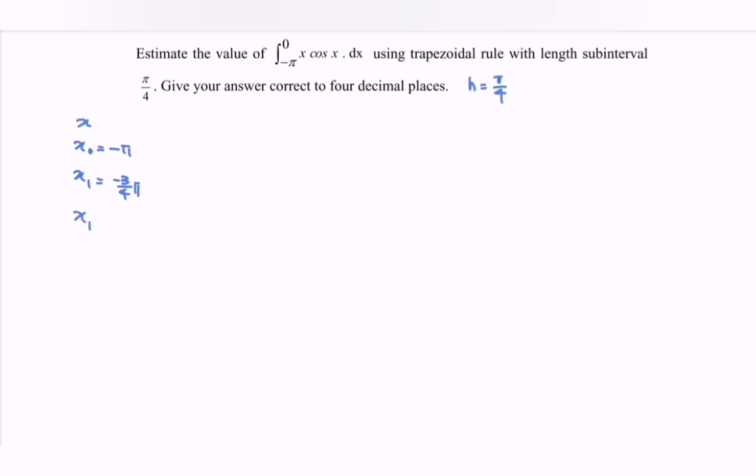Now we have x sub 2, we have negative 2 over 4 pi, and again x sub 3, where we have negative 1 over 4 pi.